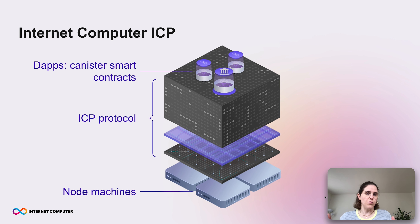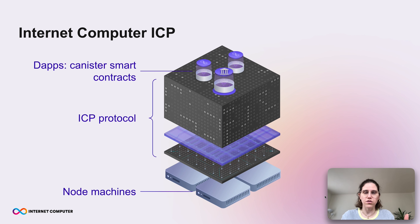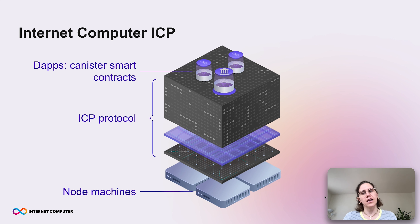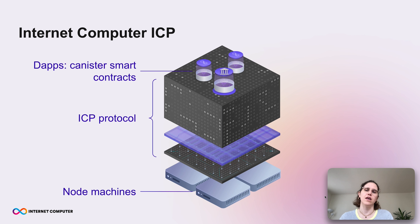The blockchain is called the Internet Computer because the vision is really that everything — the whole internet — can be run on this blockchain. When you think about these canisters, you can really think about any application or, for example, a website that you would interact with. And because these applications are run on a decentralized system, we call them decentralized applications, or DAPs for short.